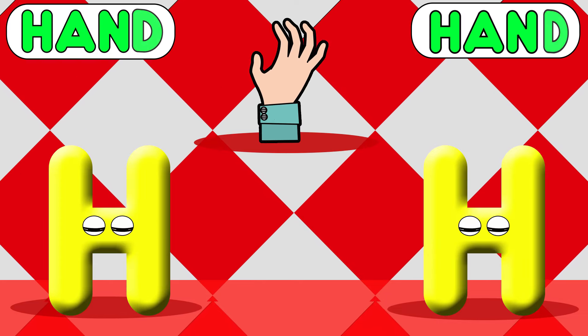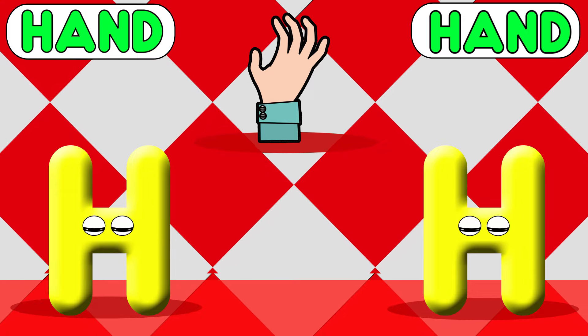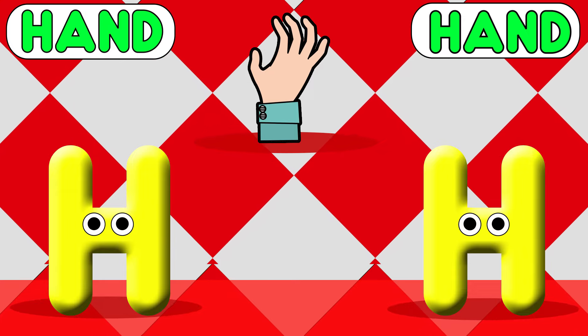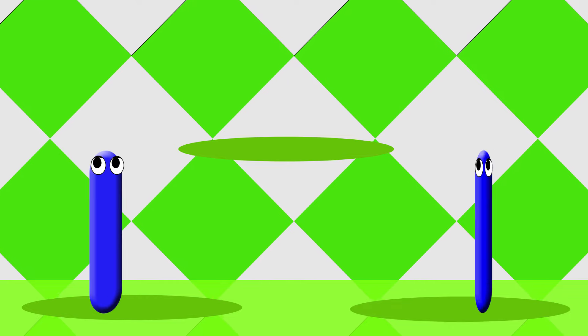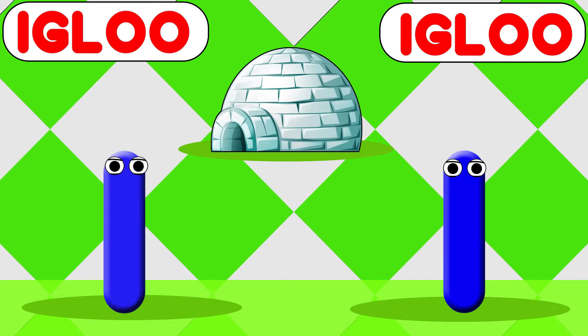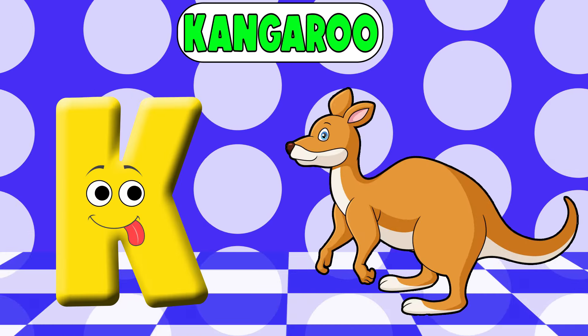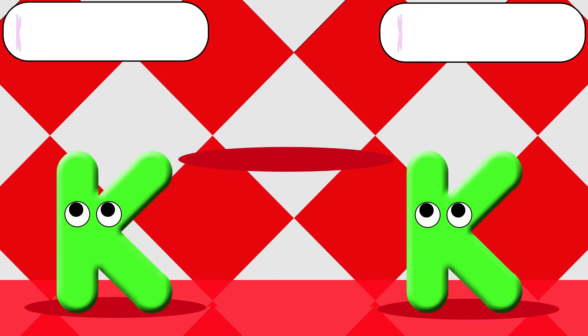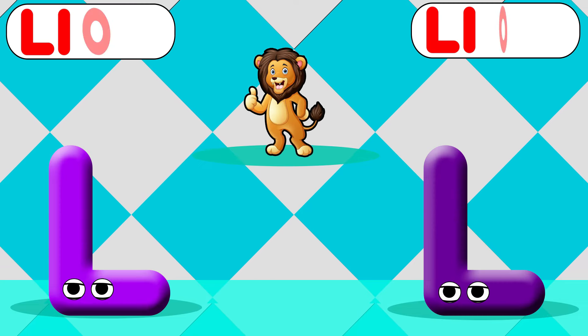I is for igloo, i-i-igloo. J is for jump, j-j-jump. K is for kangaroo, k-k-kangaroo. L is for lion, l-l-lion.